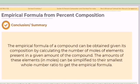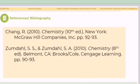To summarize, the empirical formula of a compound can be obtained given its composition by calculating the number of moles of each element present. The amounts of these elements in moles can be simplified by their smallest whole number ratio to get the empirical formula. We have now the references and bibliography for your further readings.